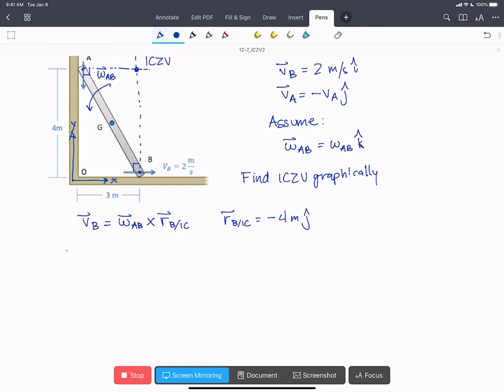We'll write 2 i-hat meters per second equals the scalar omega AB in the k-hat direction crossed with minus 4 j-hat meters. So we'll have 2 i-hat meters per second equals, and k cross minus j is going to be a positive i for omega AB in the i-hat direction. That's going to give us a value of omega AB, the scalar, equal to 0.5 radians per second.